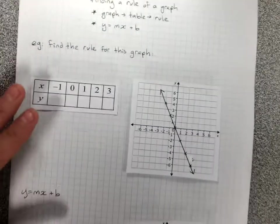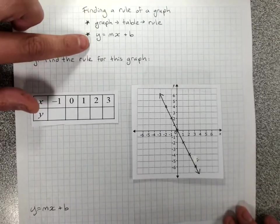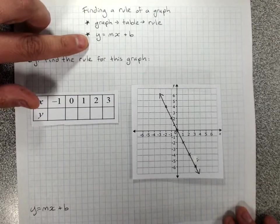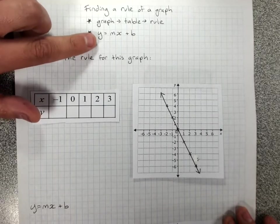Finding a rule of a graph using the graph to table to rule idea, or using the concept of the gradient intercept form, which I'll explain, y equals mx plus b.